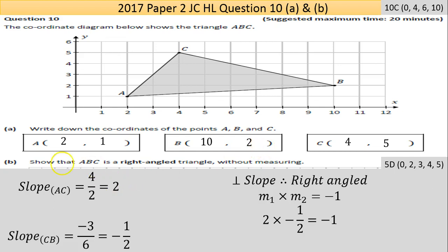Part (b) asks to show that ABC is a right angle triangle without measuring. You could calculate the length of AB, AC, and CB and use Pythagoras to prove the hypotenuse equals the sum of the squares of the two sides, but that's a lot of work.